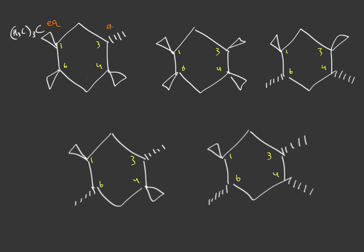Carbon three to four is odd to even and trans, so that one is also axial. Then even numbers that are cis are also axial. So we only have one equatorial there. Now if we assume carbon one is equatorial for stability, then carbon three is also equatorial because it's cis; carbon four is axial because it's odd to even and cis; and that makes the next one axial as well — even to even.